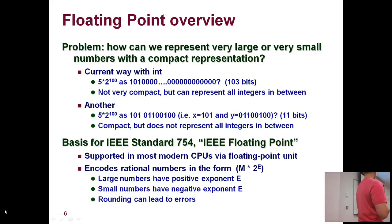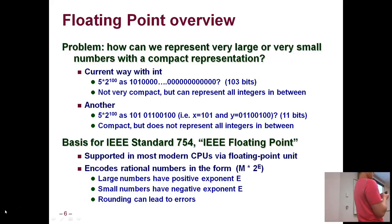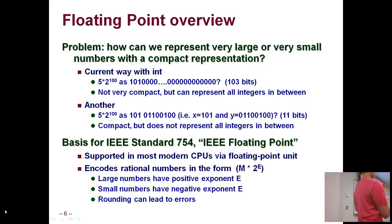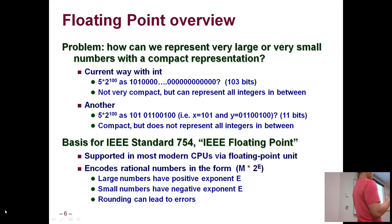That's what IEEE standard 754 is all about. It's supported on most modern CPUs via the floating point unit — every processor has this floating point subsystem. Large numbers have a positive exponent e, small numbers have a negative exponent e. It's important to note that you're going to have to do some rounding when using floating point numbers, and bad things happen if you don't take that into account.